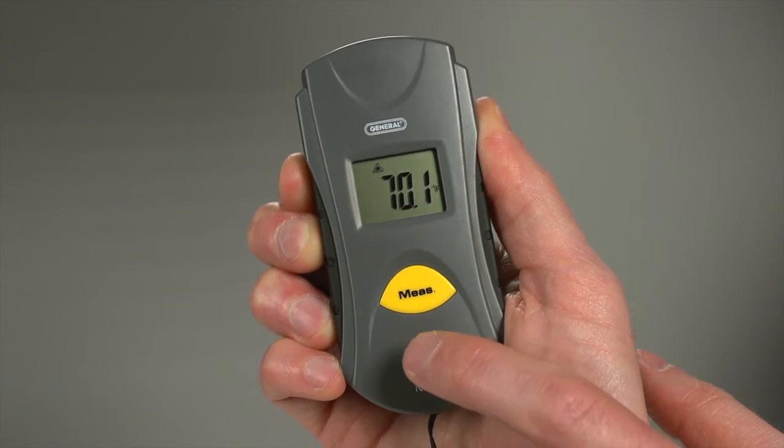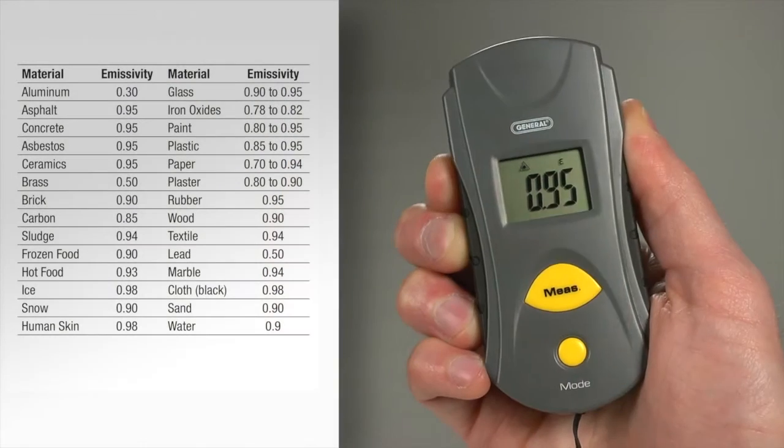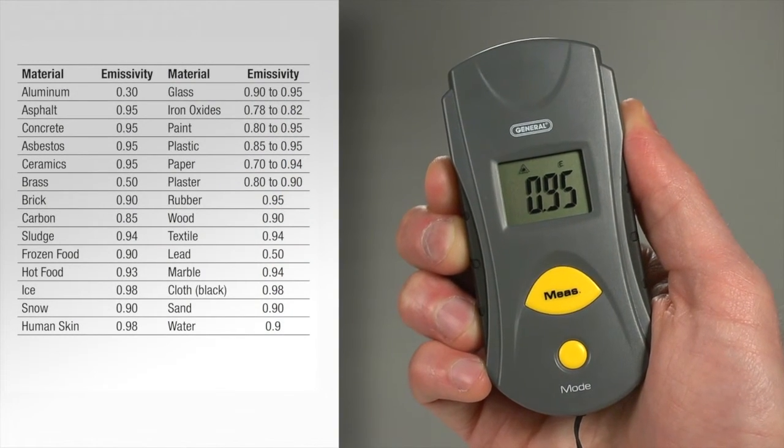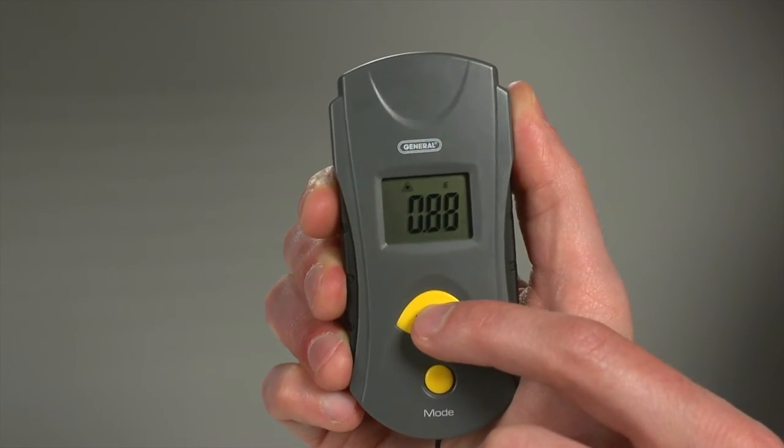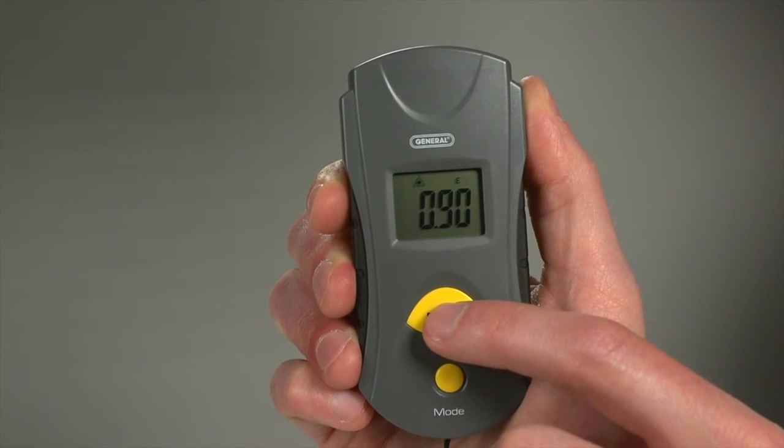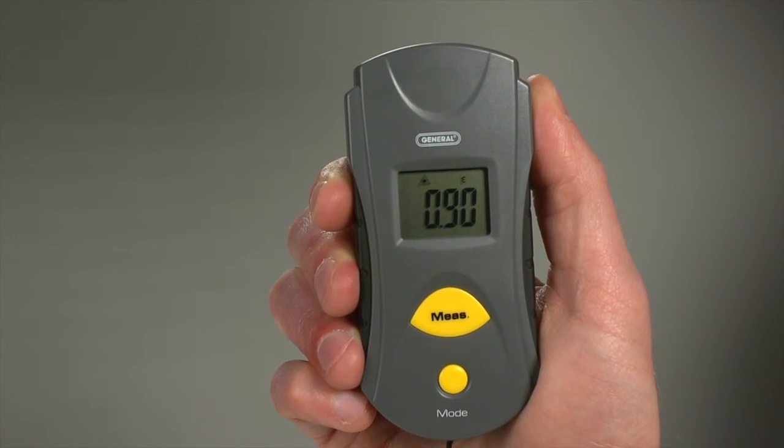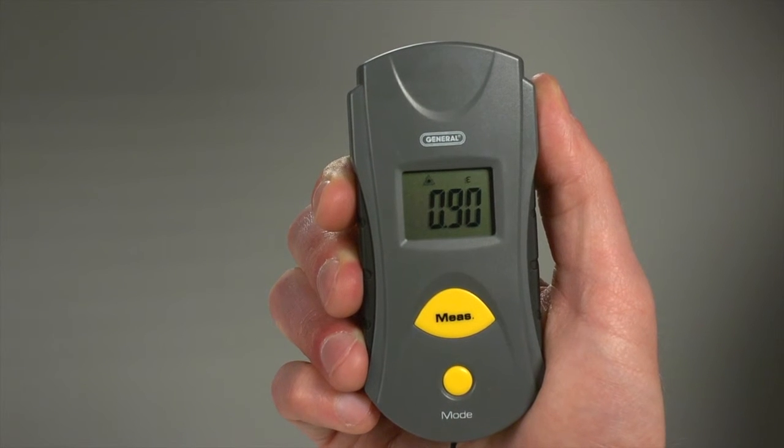Objects reflect or absorb IR radiation. This mode lets you adjust for it. The user's manual has a handy table. Water has emissivity of 0.9. In this mode, press measure to get 0.9 emissivity. Now press mode to return to measuring and proceed.